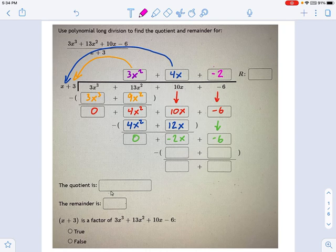And now you multiply this negative 2, again, times x plus 3. So that gives you negative 2x. And then negative 2 times 3 is negative 6.